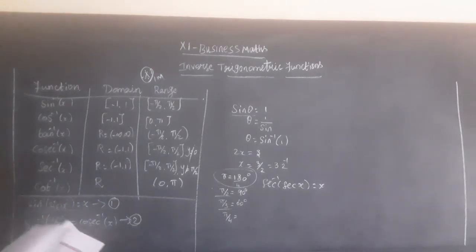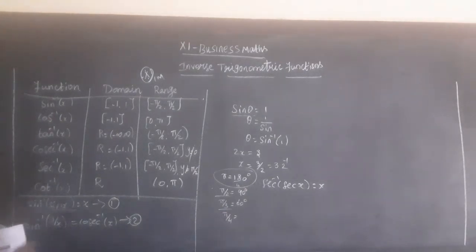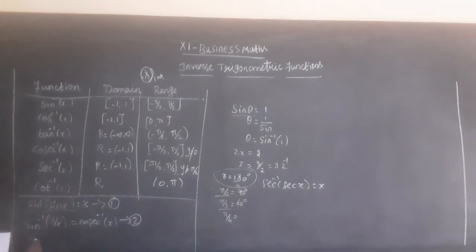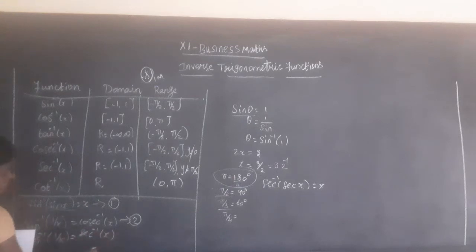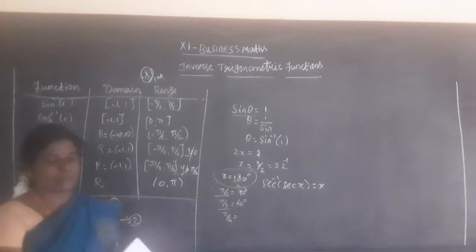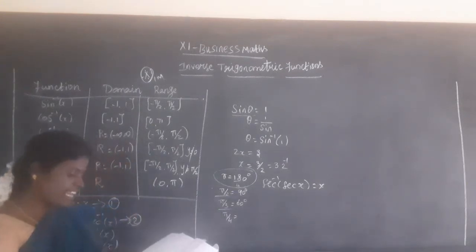The second property is about reciprocals. Sin inverse of 1 by x is equal to cosecant inverse of x. Sin and cosecant are reciprocals, cosecant and sin are reciprocals. Cos and secant are reciprocals, secant and cos are reciprocals. Tan and cot are reciprocals, cot and tan are reciprocals. So cos inverse of 1 by x equals secant inverse of x, and secant inverse of 1 by x equals cos inverse of x.